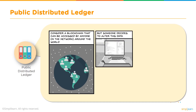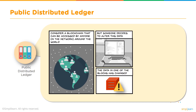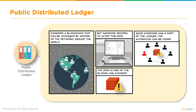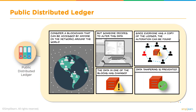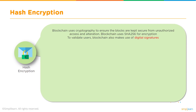Suppose someone decides to alter the data — they can go and change one of the blocks. But every participant on the network has a copy of the ledger, so it will be very easy to find that there is a block which is different from what others have. Thereby, it will be very fast to identify which block has been altered or tampered with, and that block can easily be discarded from the network, preventing data tampering.